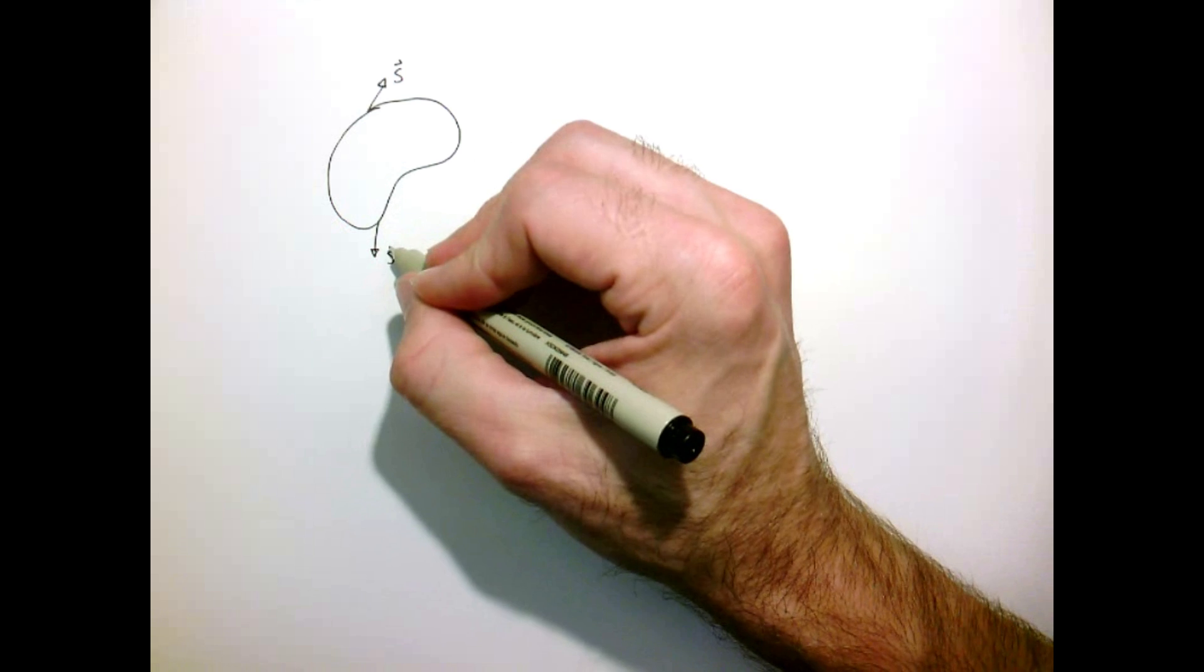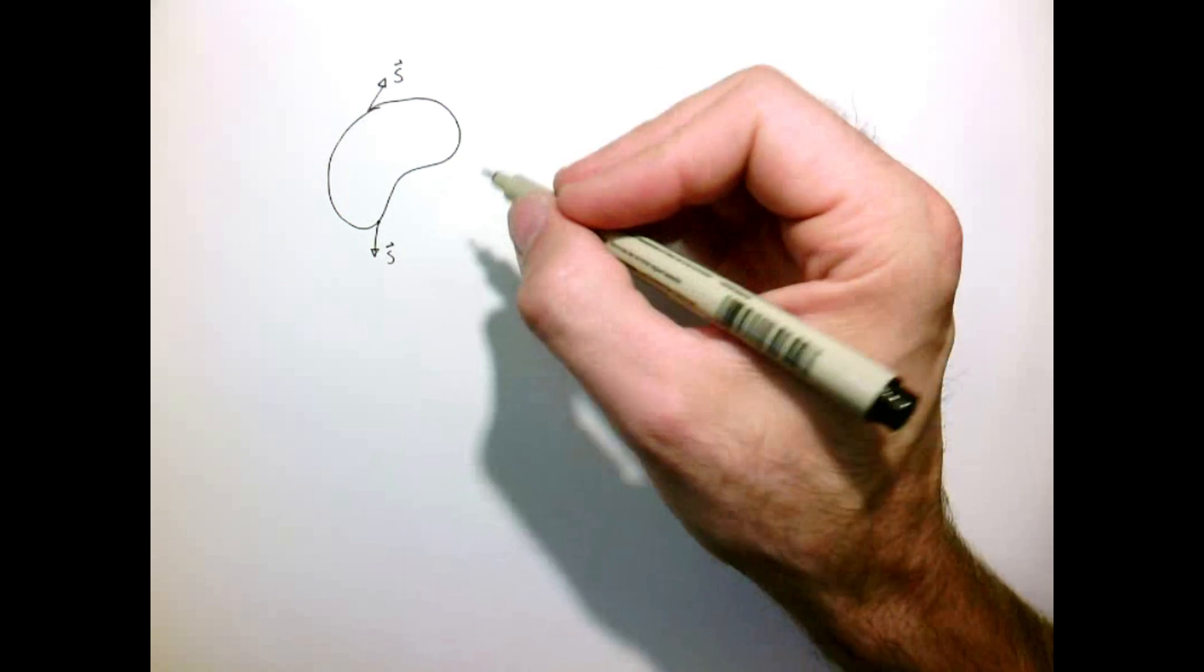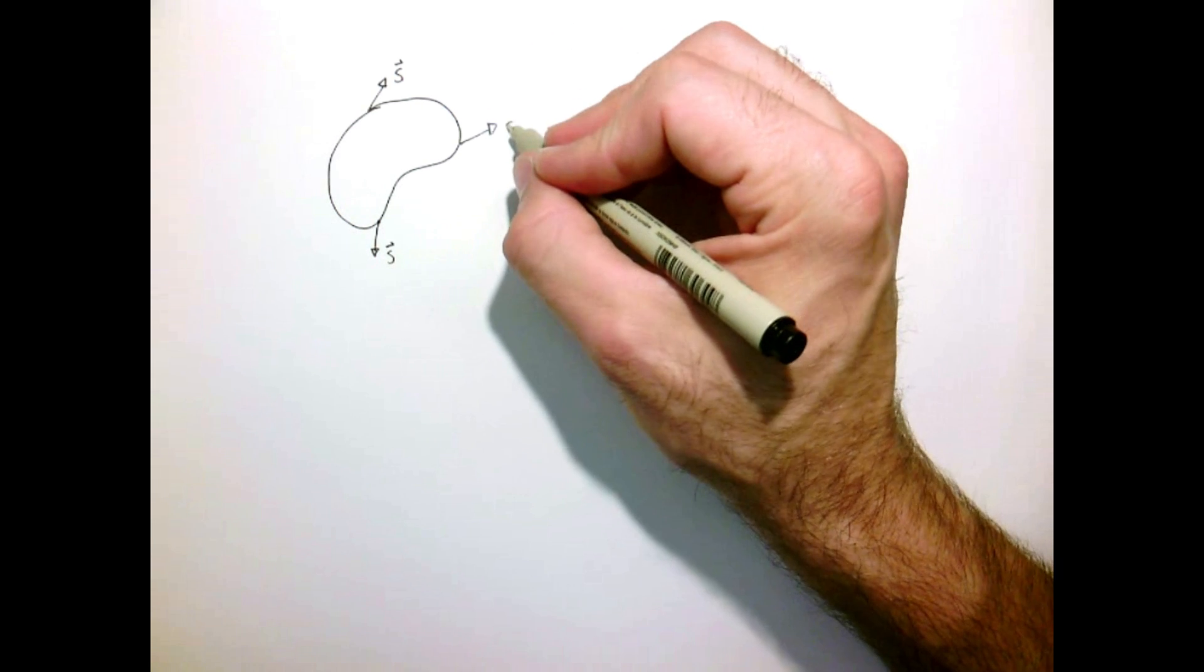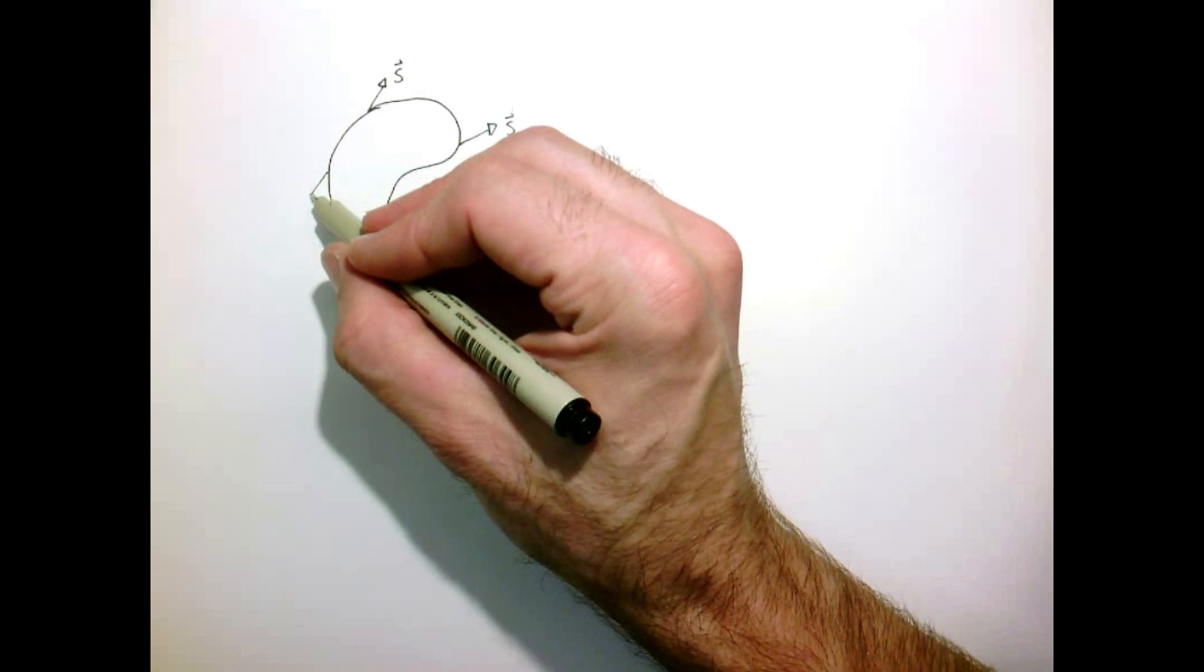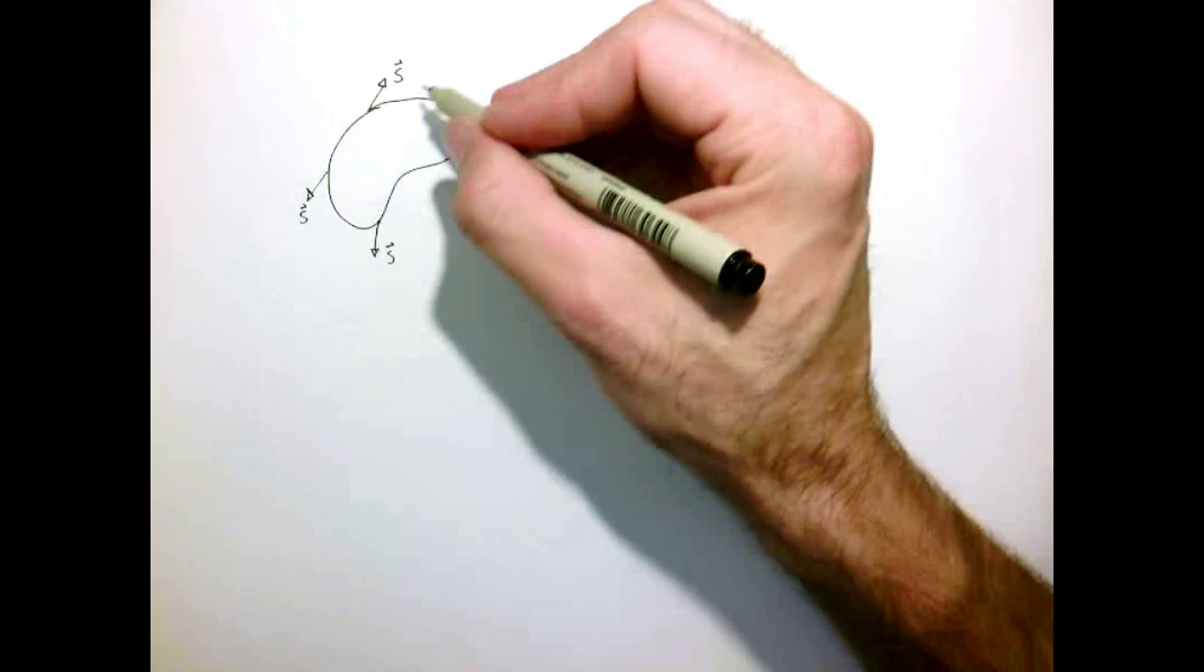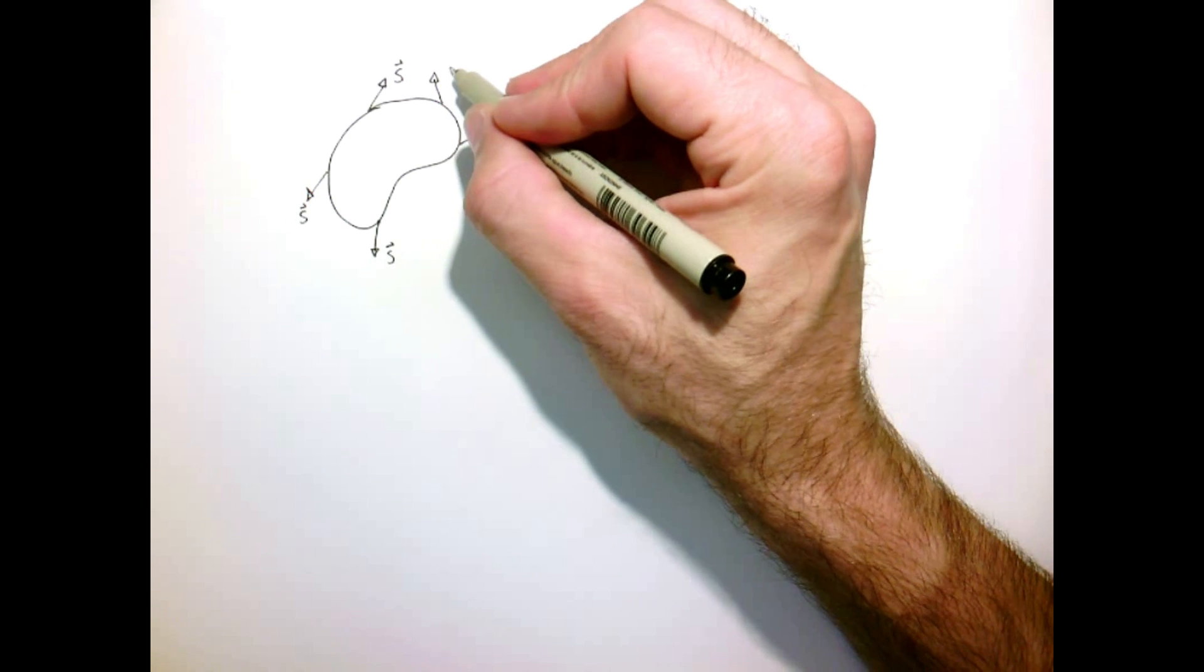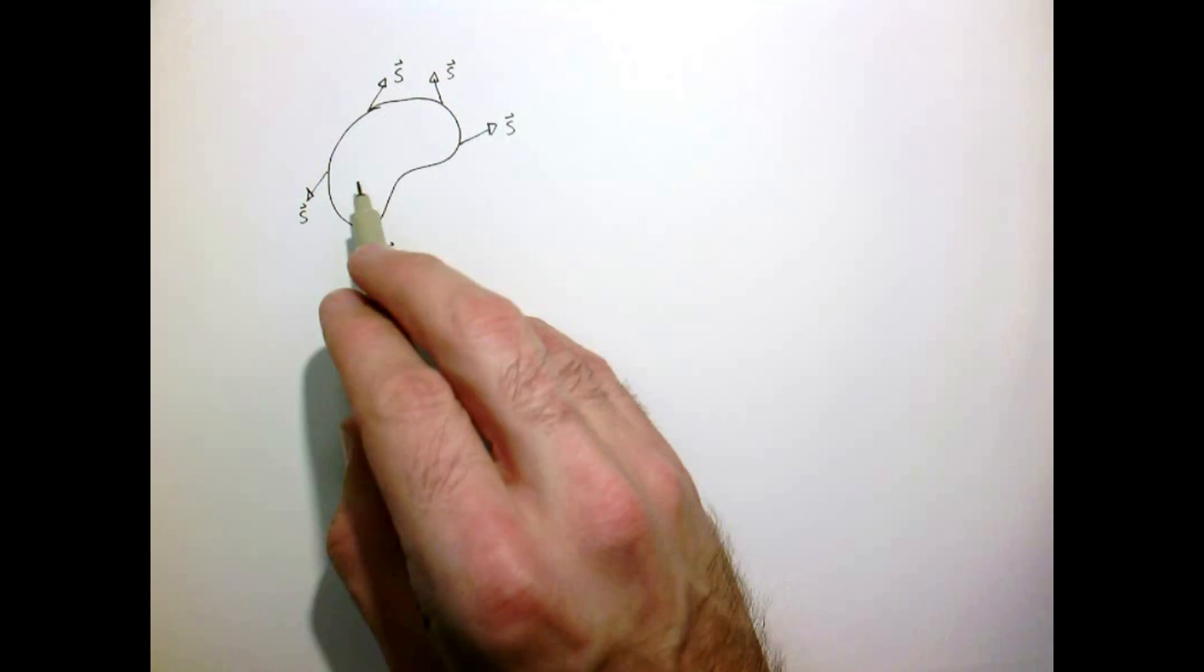we can go to a point and we can define a stress vector. So this is the force per unit area that's kind of acting locally at that point. And for whatever reason, it could be different all over the object, so it just sort of changes as we go around.